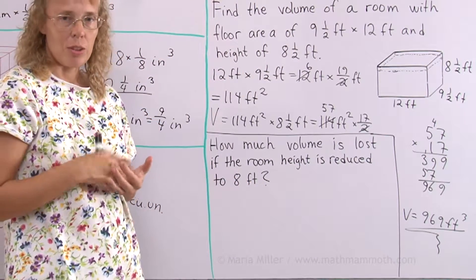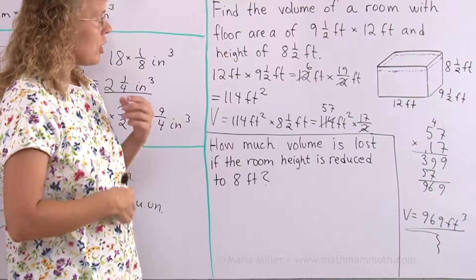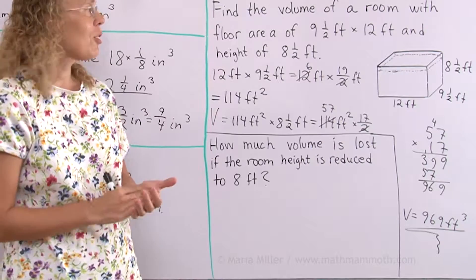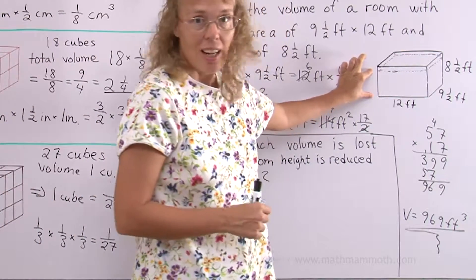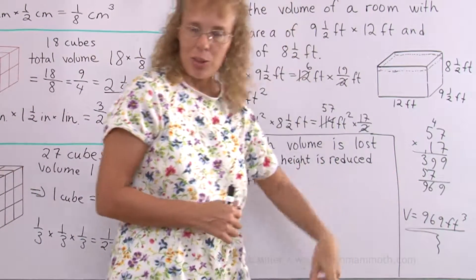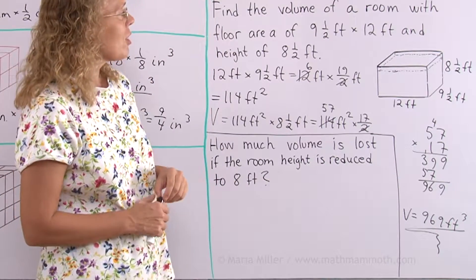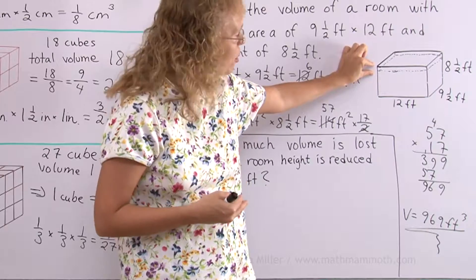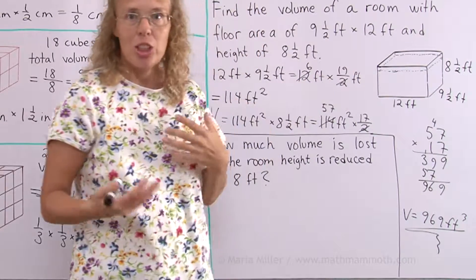You could solve this in two different ways. You could solve first how much is the new volume. How much is the volume if you use 8 as a height. And then subtract this and your new result. Or you can just think of this part that will be taken off the top of the room, so to speak. Because it is a box too.